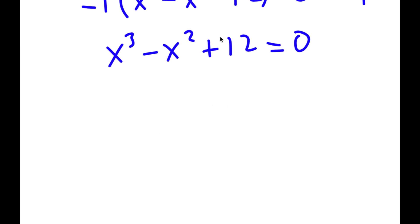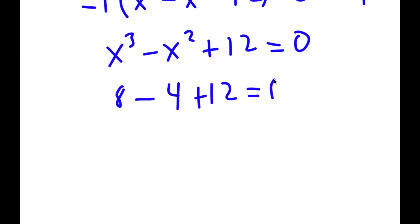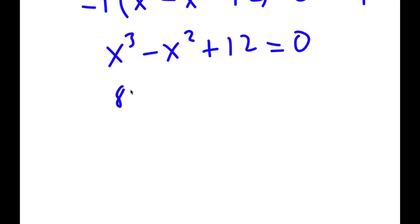To find all solutions, I need to first find one of them by plugging in values. Plugging in 1 obviously won't work. Trying x equals 2: 2 cubed is 8, minus 2 squared which is 4, plus 12 equals 16, which does not equal 0. So let's try negative 2.